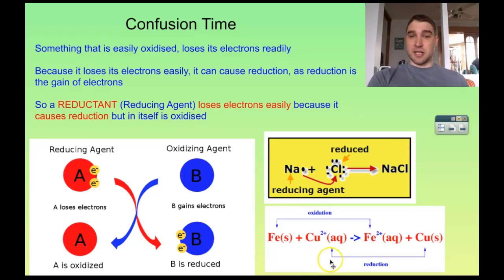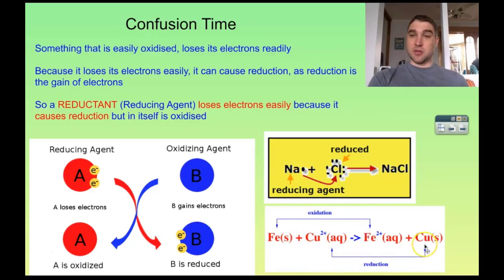Let's look at an example. Here we have iron being oxidized to iron 2+ ions, and we have copper 2+ ions being reduced to solid copper.